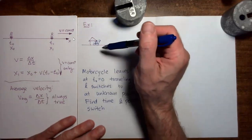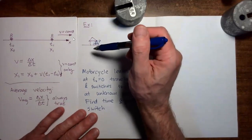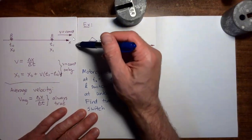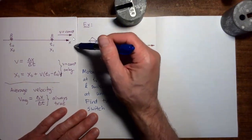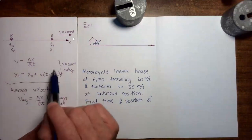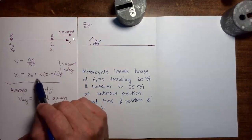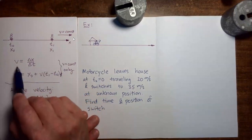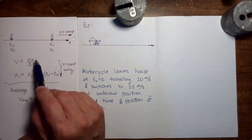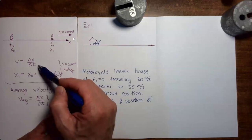We have already learned some equations that we can use to describe objects moving in a straight line with constant velocity. So let's say we have this person moving along the x-axis with constant velocity. One way to describe that motion is to say that the velocity of that person is the change in position divided by the time interval during which that change in position occurred.